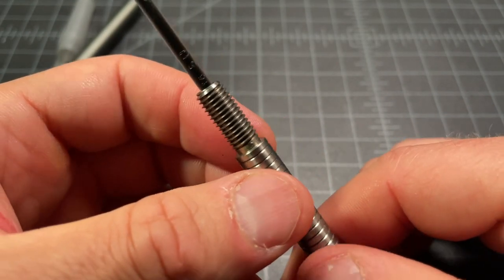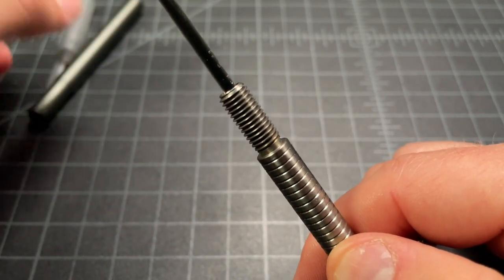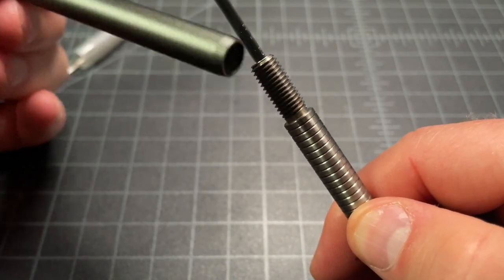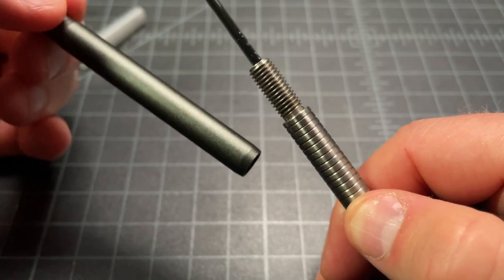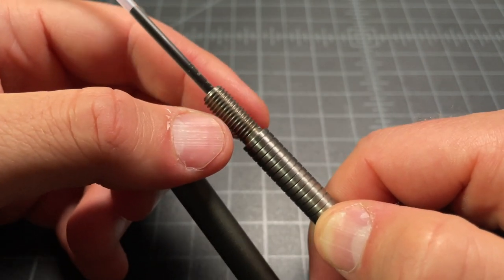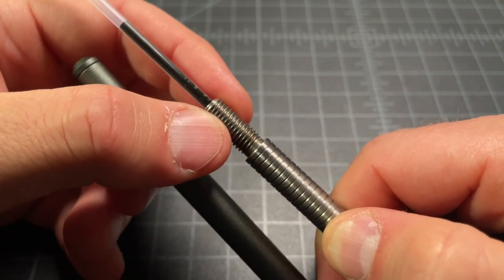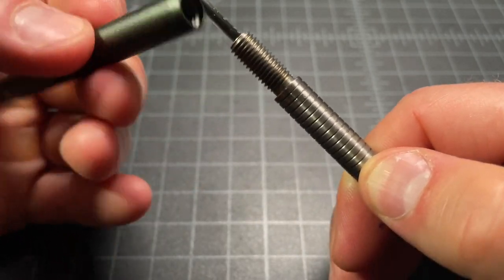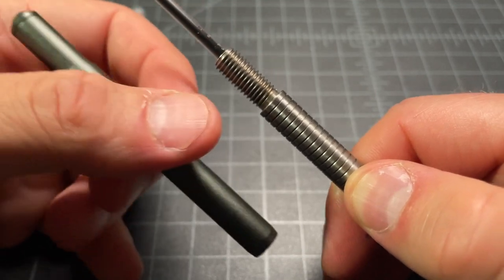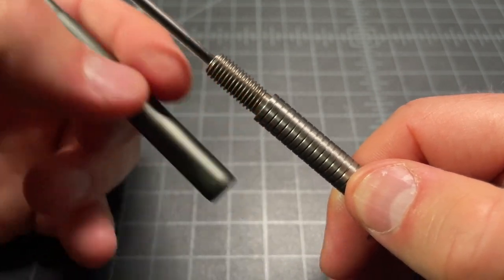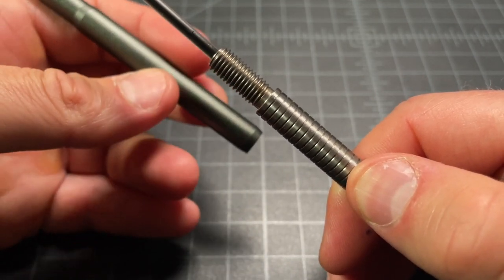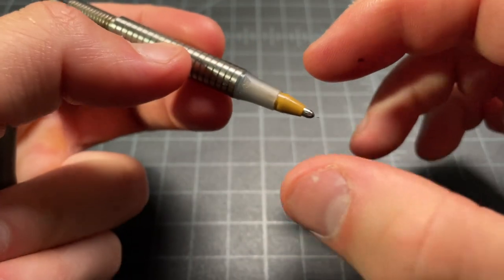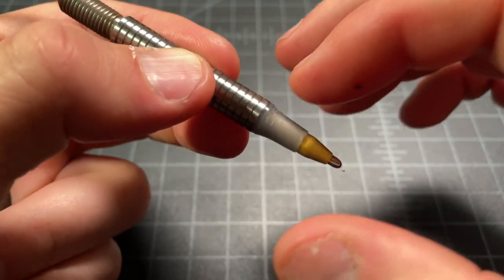I think this pen, I doubt it'll loosen up even though you have titanium on aluminum contact. Titanium, I'm not like a metallurgist, but I believe it's known as a slippery metal. I think by doing that extra threading, even though it's going into this aluminum, it'll stay nice and tight. I haven't had any problems with this pen loosening up.